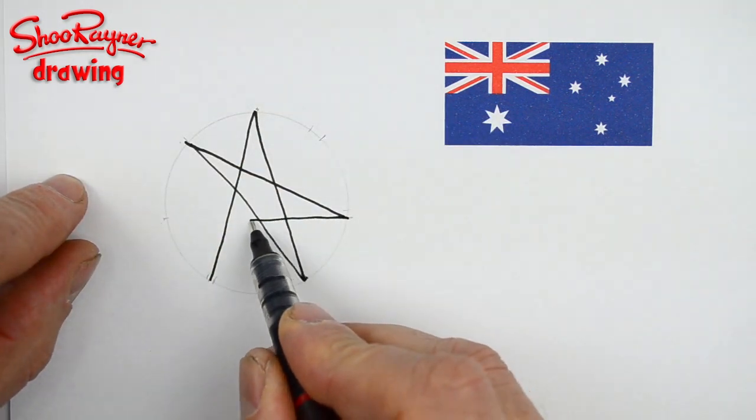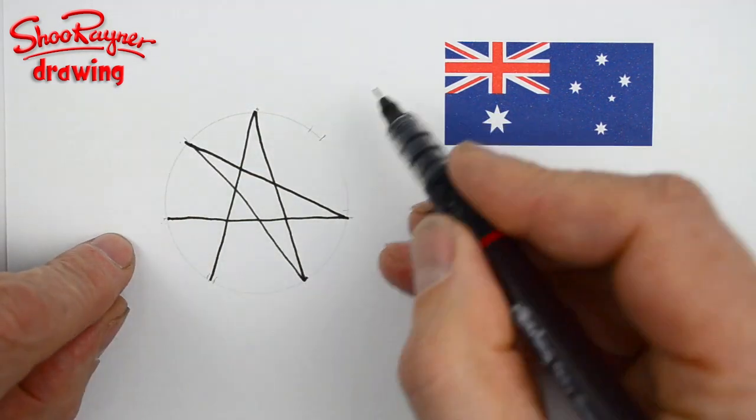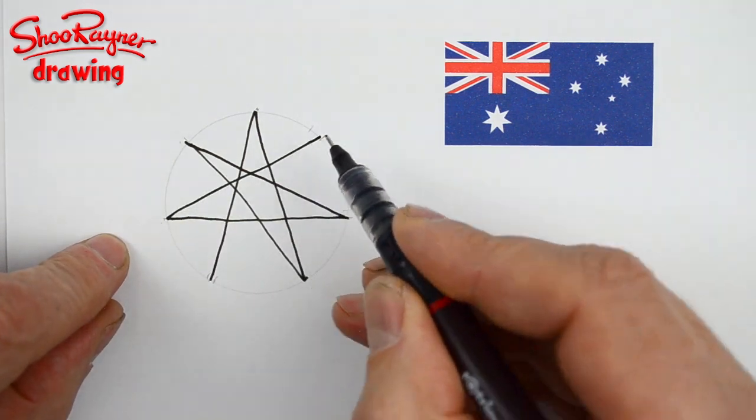Then we're coming around this way to that point there, and then we're going to that point up there and that point down there.